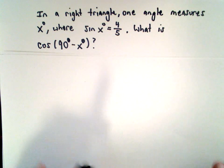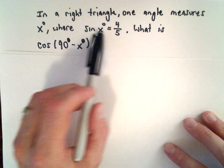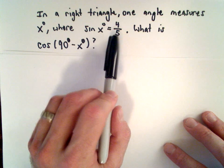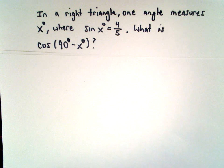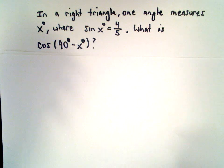In a right triangle, one angle measures x degrees and sine of x degrees equals four-fifths. We want to know what's the value of cosine of 90 degrees minus x degrees. There's an easy way to do this and a slightly longer way using right triangles. We'll talk about both. The easy way...